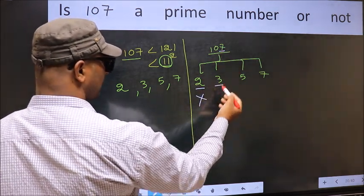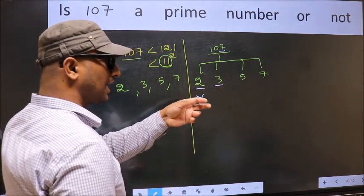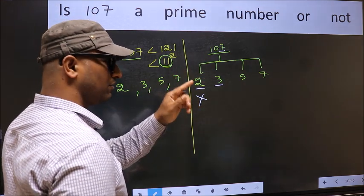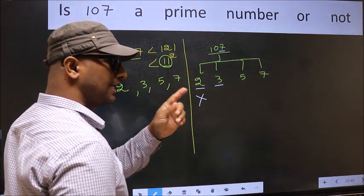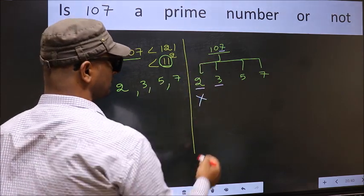Next number 3. To check divisibility by 3, add the digits. 1 plus 0 plus 7, we get 8, and 8 is not divisible by 3. So this number is also not divisible by 3.